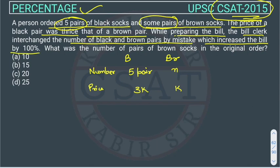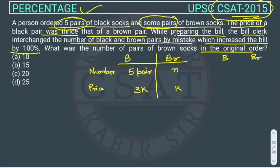This interchange increased the bill by 100 percent. The question asks: what was the number of pairs of brown socks in the original order? The customer is buying black and brown socks — black is five pairs, brown is n pairs. The clerk gave him n pairs of black and five pairs of brown by mistake.